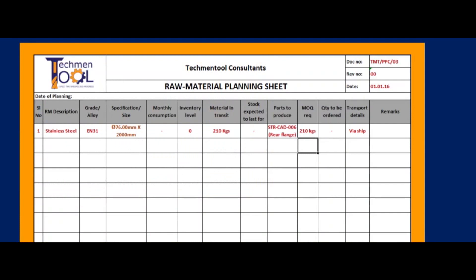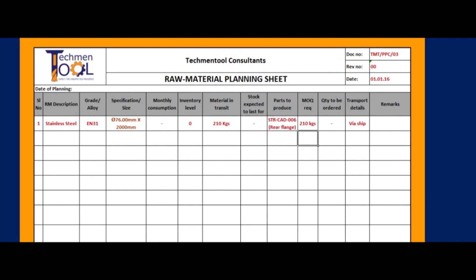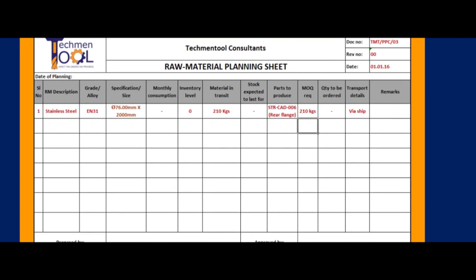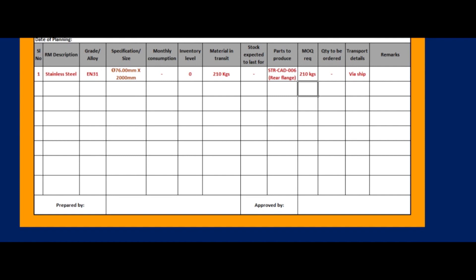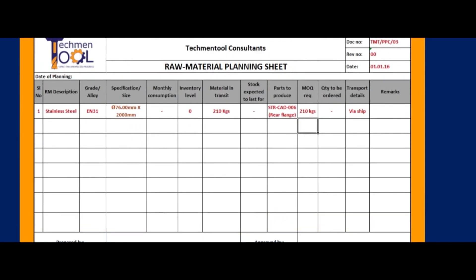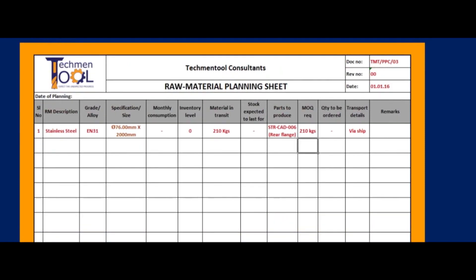Using this, we can calculate raw material needed for the required quantity. A raw material planning sheet includes: raw material description, grade or alloy, material specification or size, monthly consumption, inventory level details, material in transit details, parts to be produced details, minimum order quantity, quantity to be ordered, transport details, and more.